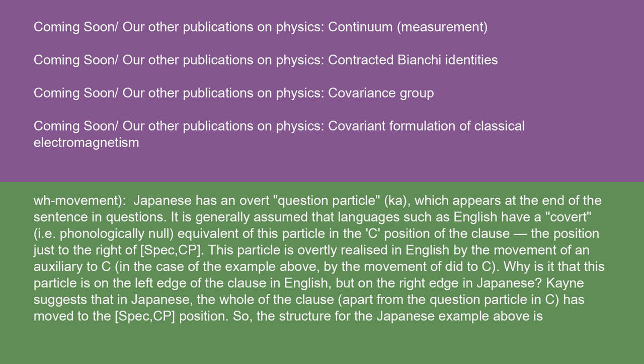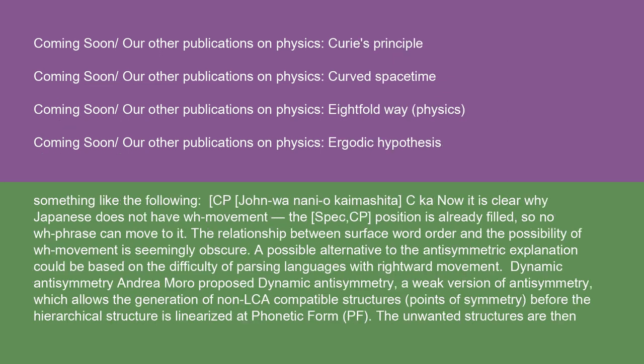Kayne suggests that in Japanese, the whole of the clause, apart from the question particle in C, has moved to the spec CP position. It is then clear why Japanese does not have WH movement — the spec CP position is already filled, so no WH phrase can move to it. The relationship between surface word order and the possibility of WH movement is seemingly obscure. A possible alternative to the antisymmetric explanation could be based on the difficulty of parsing languages with rightward movement.